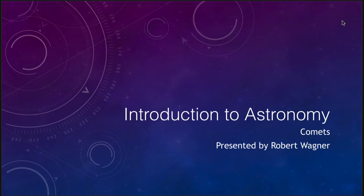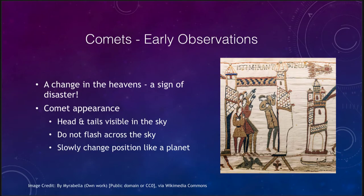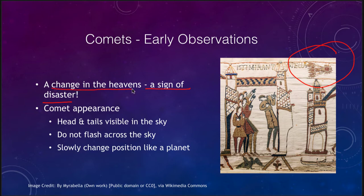Let's look at some of the early observations first. Comets have been seen for thousands of years. They can be very easily visible in the sky, and here is one shown in a little tapestry here where we can see it. One of the problems was that it was seen as a sign of disaster. Because it was a change in the heavens. Long ago, even just 500 to 1,000 years ago, any sign of change in the heavens was seen as a sign of disaster coming.